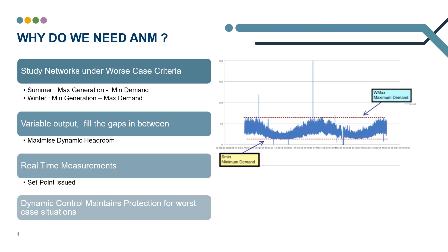So why do we need A&M systems? Currently, our networks are studied at two worst case scenarios. In the summer, the networks are investigated with maximum generation and minimum demand. And in the winter, the networks are studied with minimum generation and maximum demand.